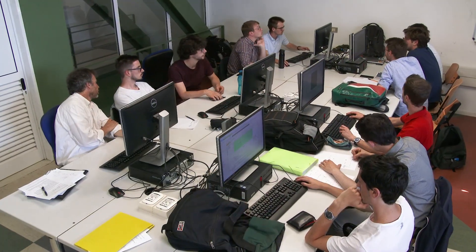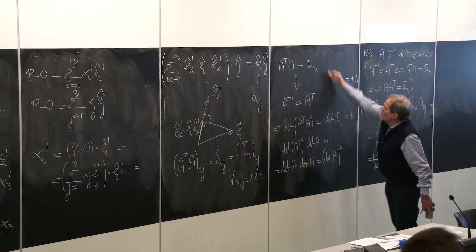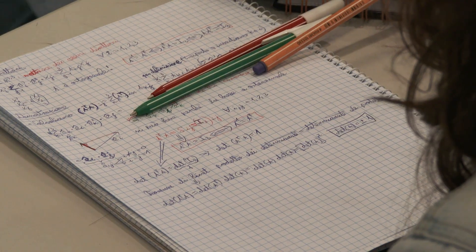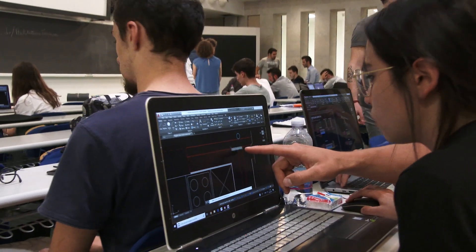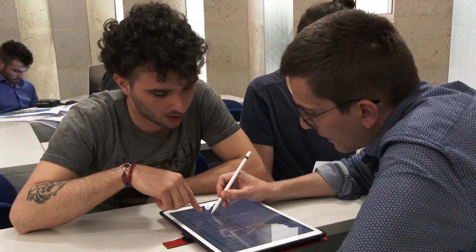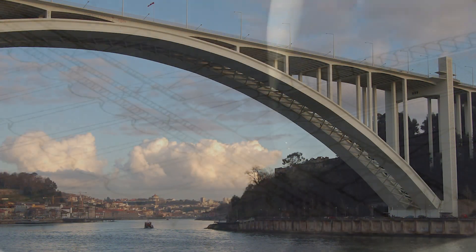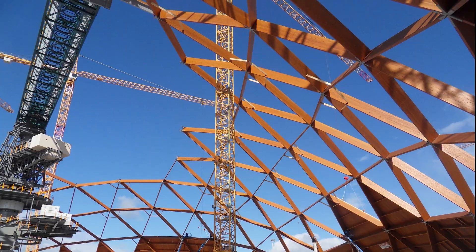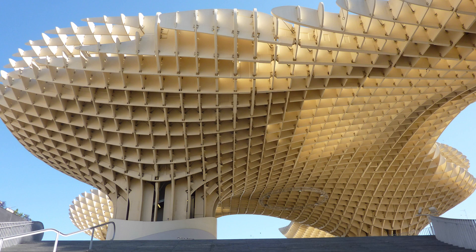I corsi di laurea triennale e magistrale in Ingegneria Civile dell'Università di Trento hanno l'obiettivo di formare tecnici con una solida preparazione necessaria alla progettazione, realizzazione, gestione e controllo di edifici civili e industriali e di grandi infrastrutture.